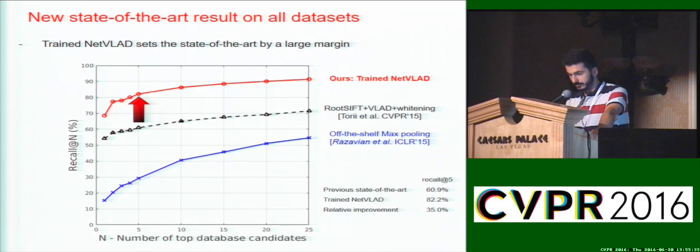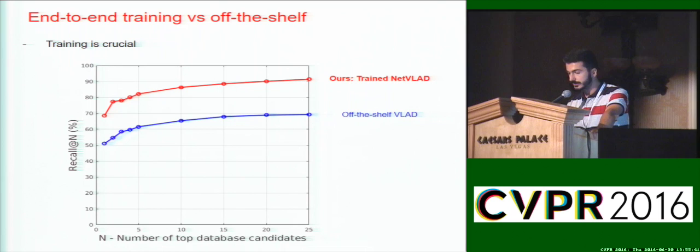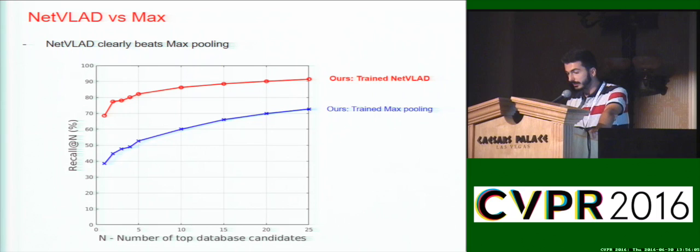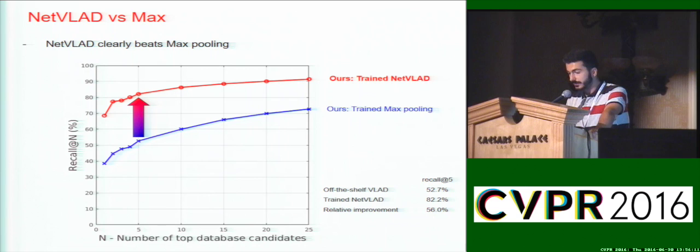We also investigate the benefits of training the system end-to-end. Previous work has used off-the-shelf CNNs trained on the ImageNet classification task, but using these as black-box descriptor extractors is very suboptimal. Our NetVLAD pooling with weakly supervised training beats off-the-shelf VLAD by 33%. We also compare NetVLAD pooling to max pooling, which has been a popular pooling approach for CNN descriptors. NetVLAD is clearly superior, and we see the same improvements for different network architectures, off-the-shelf and trained representations, as well as different dimensionalities.